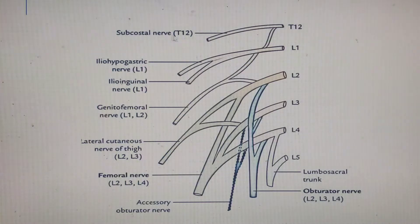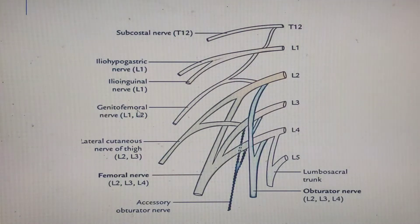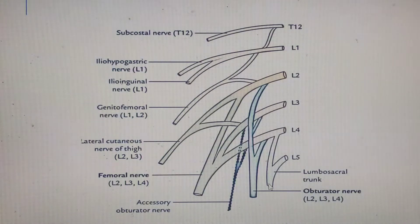These are the nerves of the lumbar plexus: subcostal nerve from T12; iliohypogastric and ilioinguinal from L1; genitofemoral nerve L1–L2; lateral cutaneous nerve of the thigh L2–L3; femoral nerve L2–L4; obturator nerve L2–L4; and in about 30% of the population, the accessory obturator nerve.